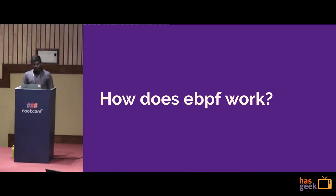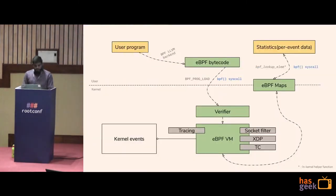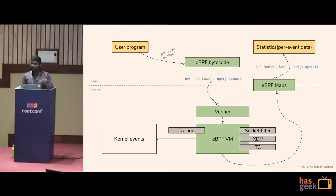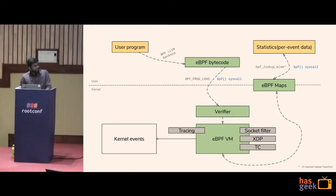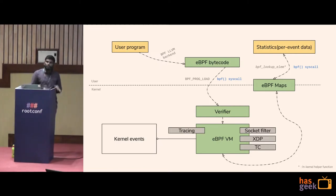Let's look at how eBPF works. You write a user space program in Python, C, or similar, compile it to eBPF bytecode using LLVM — which has backend support for it — then use the BPF syscall to load the program. There is a verifier that ensures your program is safe to run inside the kernel, and then a virtual machine executes it. eBPF has hooks into kernel subsystems; when that kernel code path is traversed, the BPF program executes inside the VM.